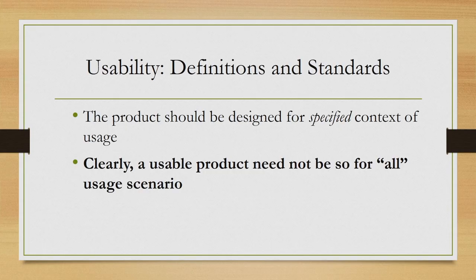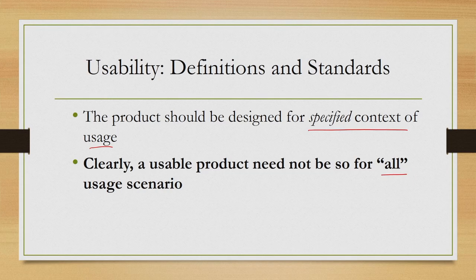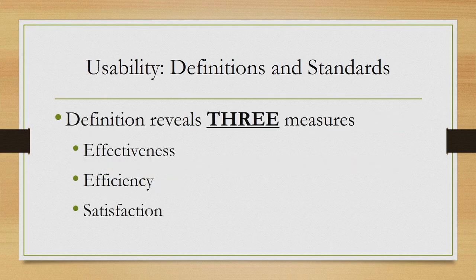The third crucial aspect is that the product should be designed for a specified context of use. In other words, a usable product need not be so for all usage scenarios. We need not try to design a usable product which can be used in any context — it has to be usable within some specified context of use, not for every usage context. Along with these three crucial aspects, there are also three explicit measures mentioned in the standard definition: effectiveness, efficiency, and satisfaction.